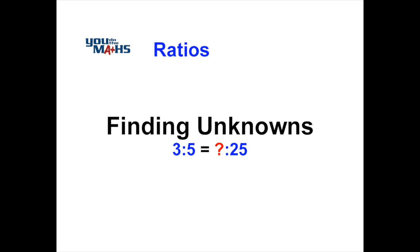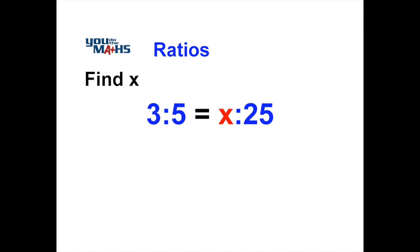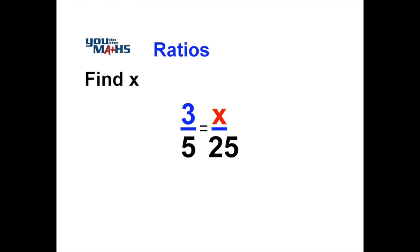In these examples we're being asked to find an unknown value within a given ratio. Our example here we've got a ratio of 3 to 5 equaling something to 25. We'll call that unknown value x. The way we go about solving it is to treat the ratios like fractions, so we'll express the first ratio as 3 over 5 and the second ratio as x over 25.